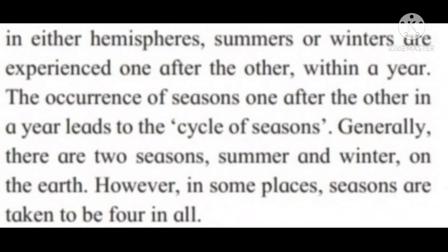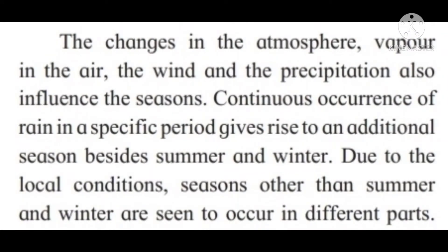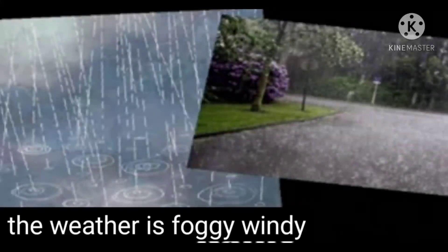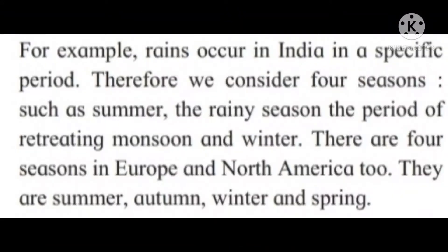The occurrence of seasons one after the other in a year leads to the cycle of seasons. Generally there are two seasons — summer and winter — on the earth. However, in some places seasons are taken to be four in all. The changes in the atmosphere, vapour in the air, wind and precipitation also influence the seasons. Continuous occurrence of rain in a specific period gives rise to an additional season besides summer and winter.